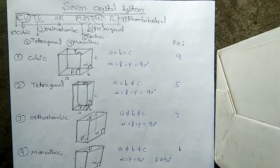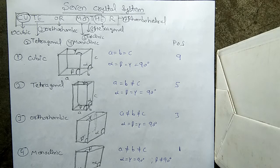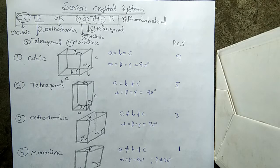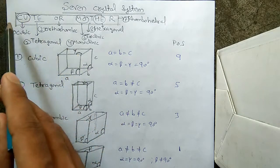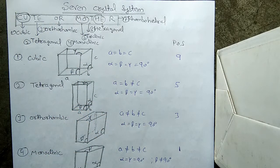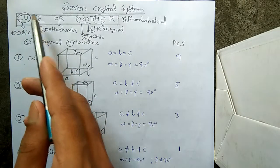Hello friends, in this video we are going to learn about the different types of crystals — not types in general, but the shapes in which they are formed. There are seven systems, and the name of this topic is 'Seven Crystal Systems.' Many people can't remember the names, so I have learned a mnemonic from which we can easily learn them. The mnemonic is: CU TH OR MO T HE R.